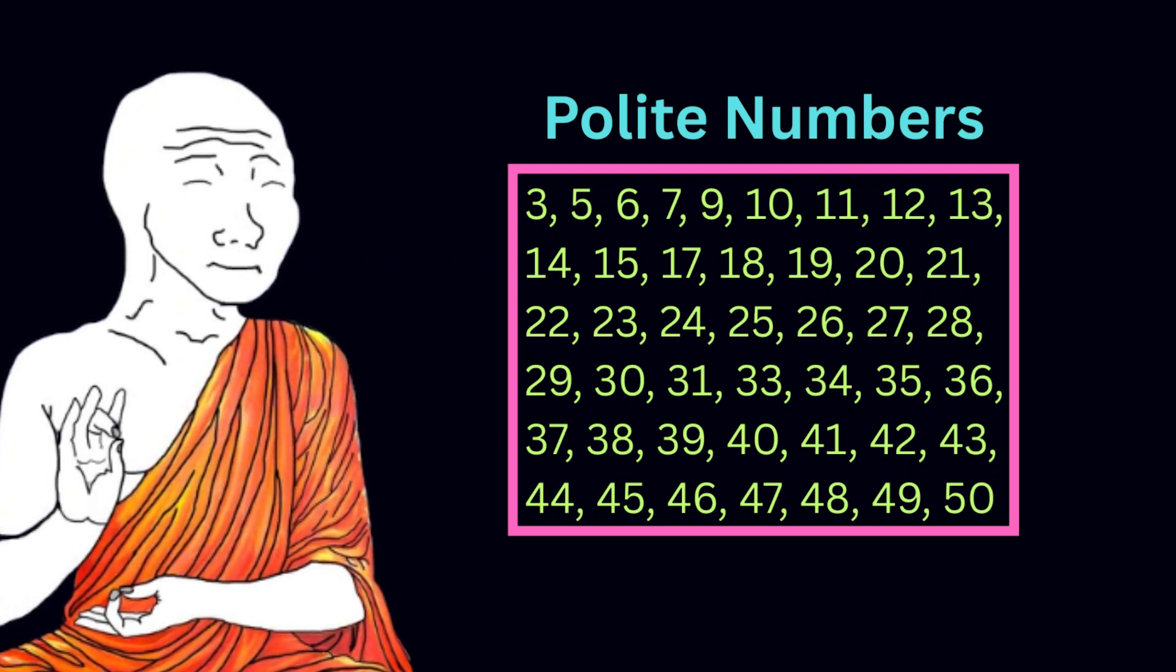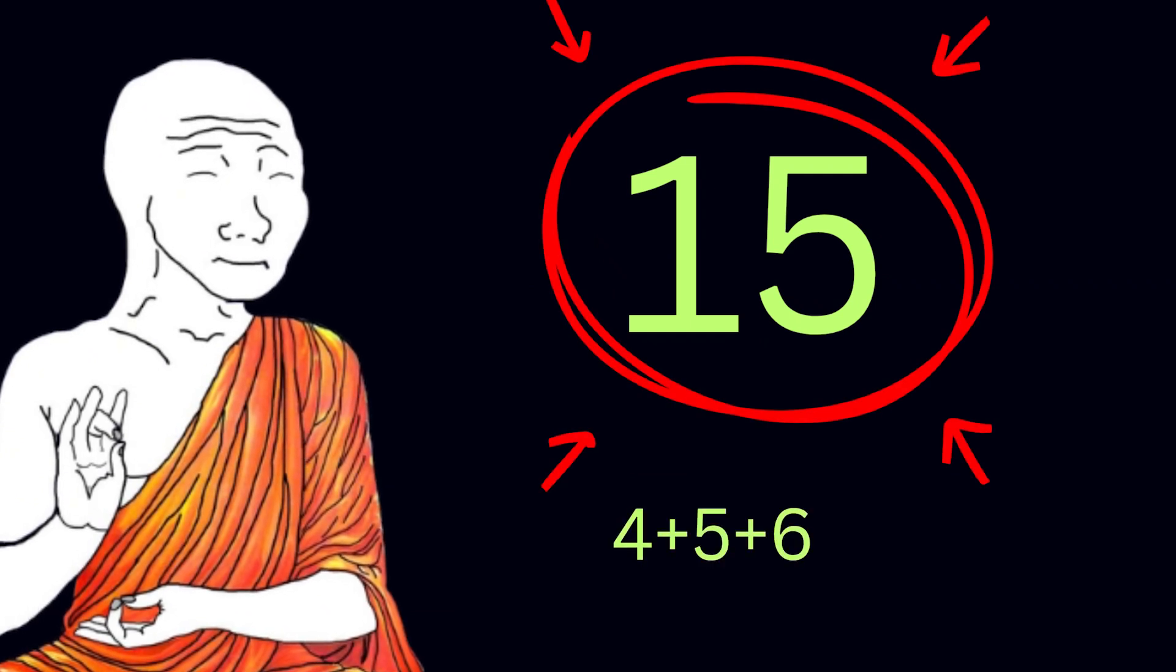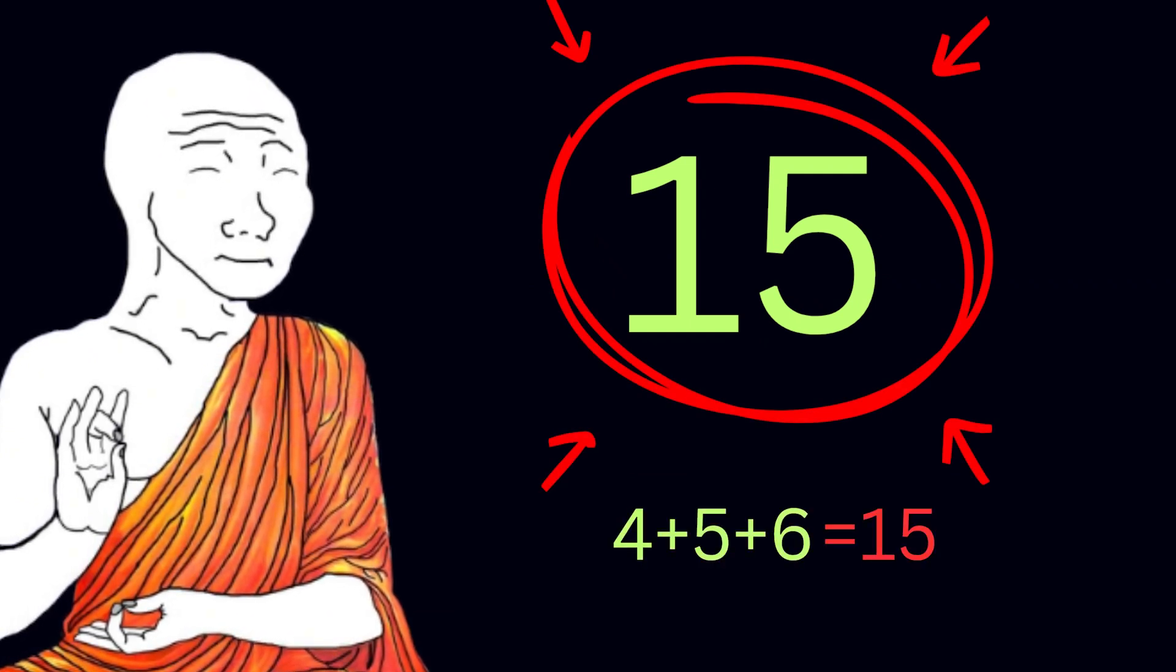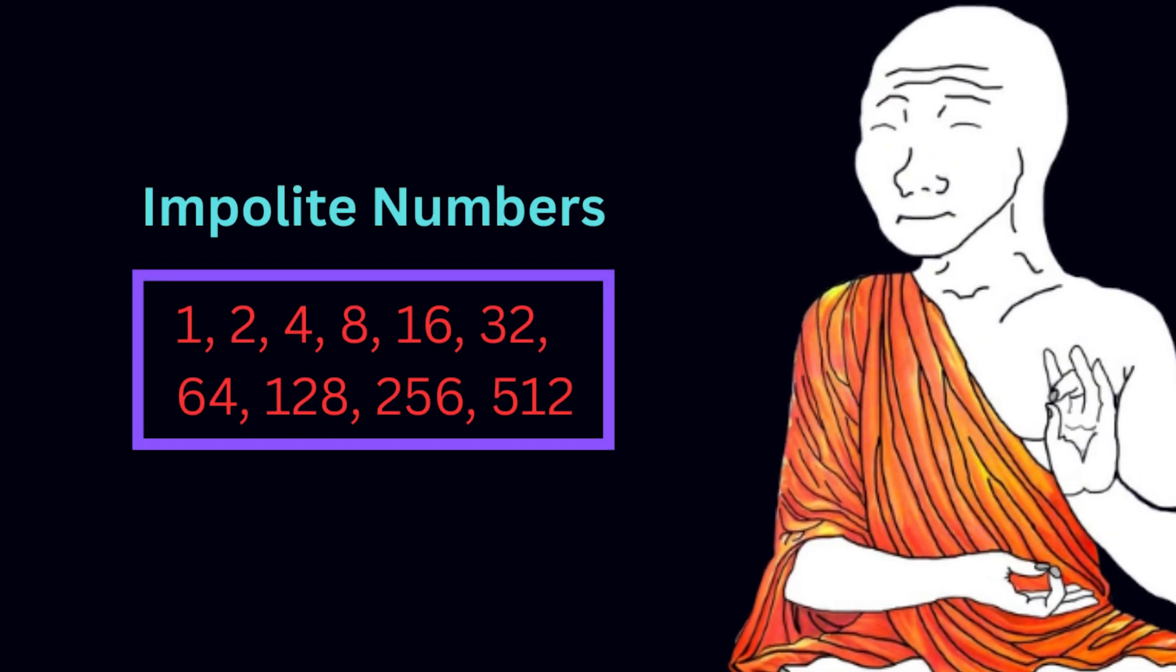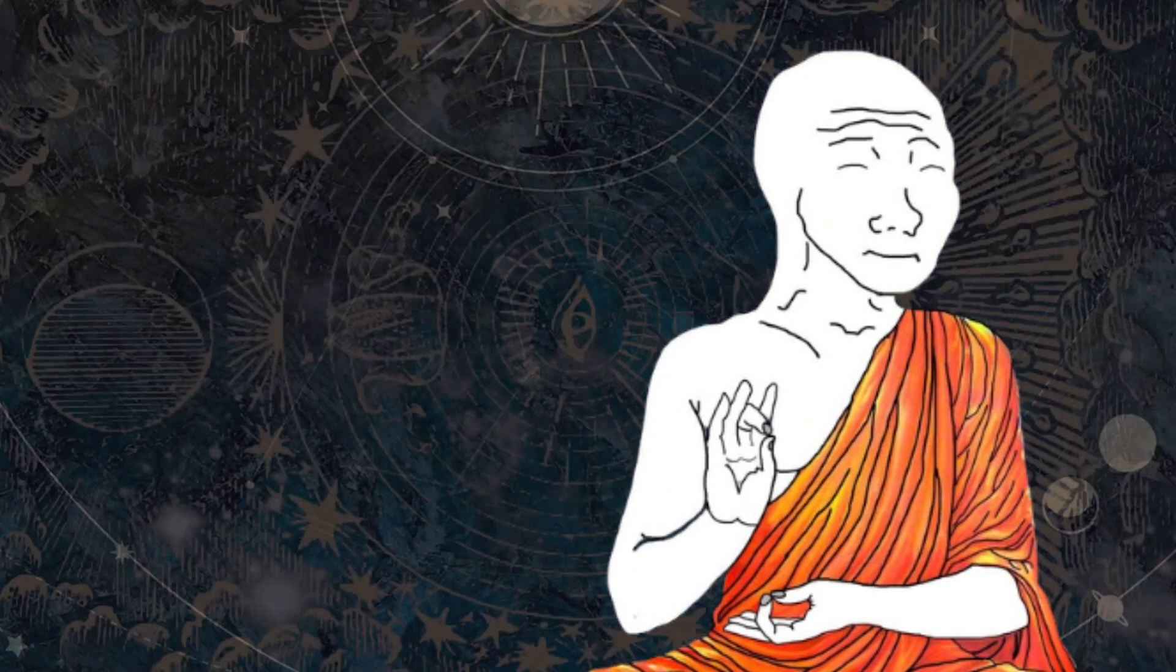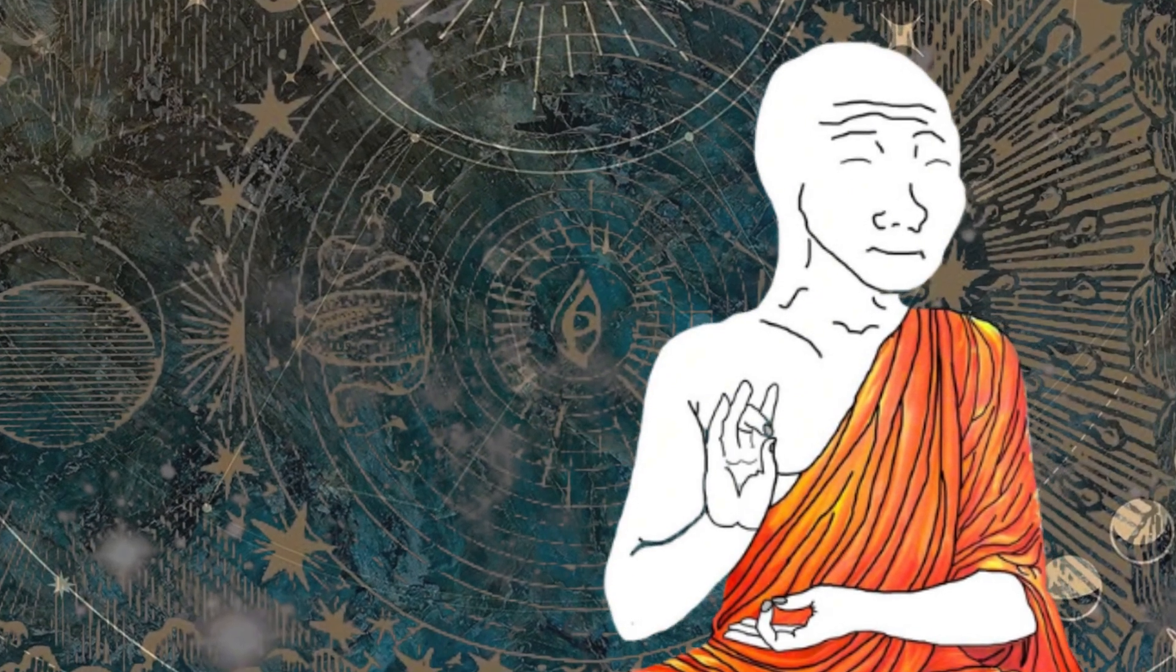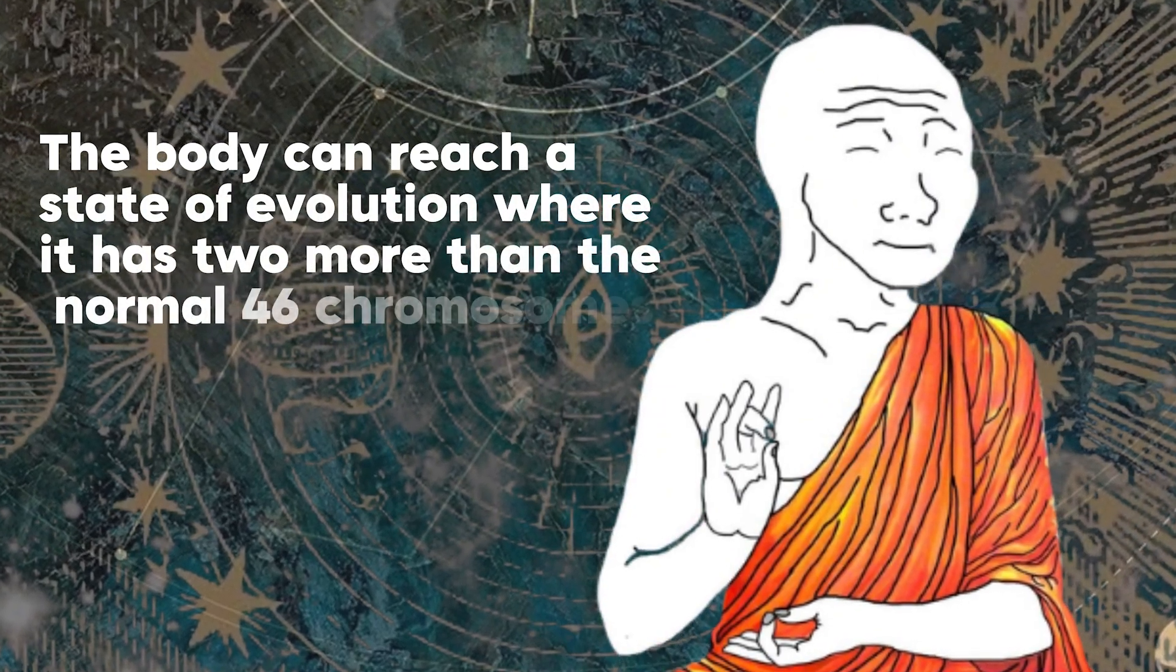So for example 15 is a polite number because 4 plus 5 plus 6 equals 15. Any number that is not polite would be impolite. Impolite numbers are exactly the powers of 2 and any number that is not the power of 2 is polite. 46 and 2 is a song by American rock band Tool. It refers to an esoteric theory that says the body can reach a state of evolution where it has two more than the normal 46 chromosomes.